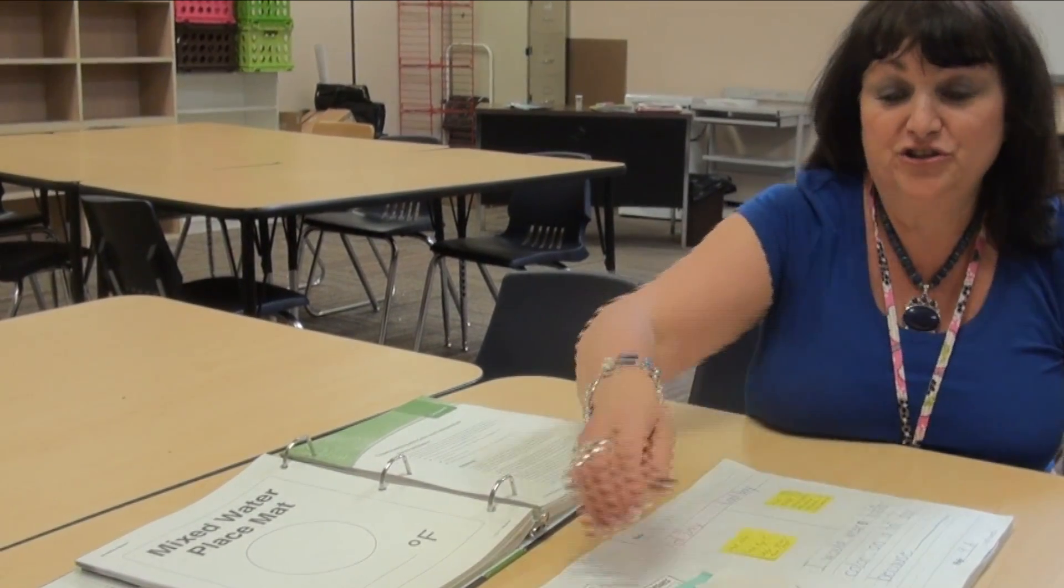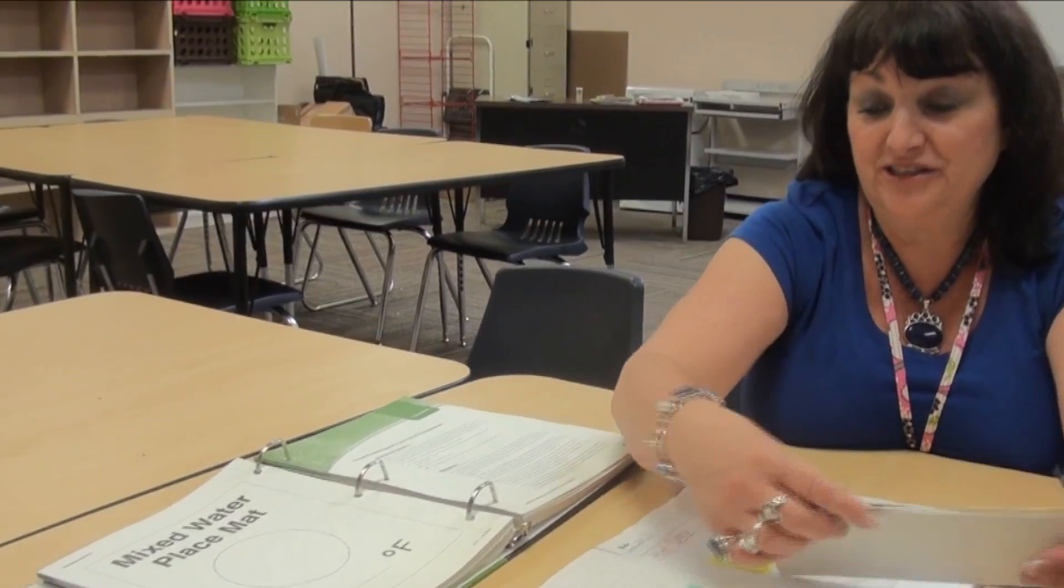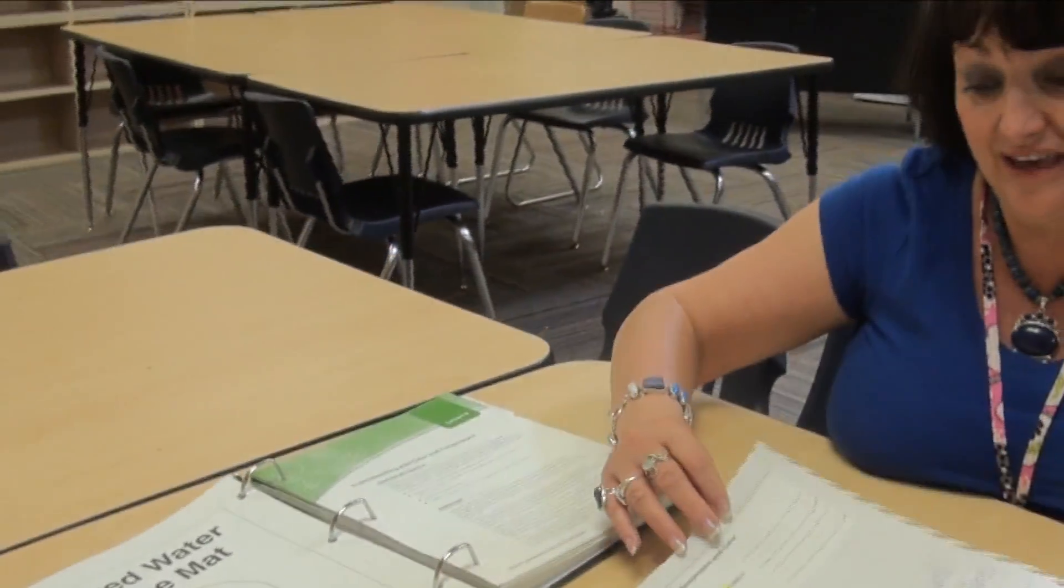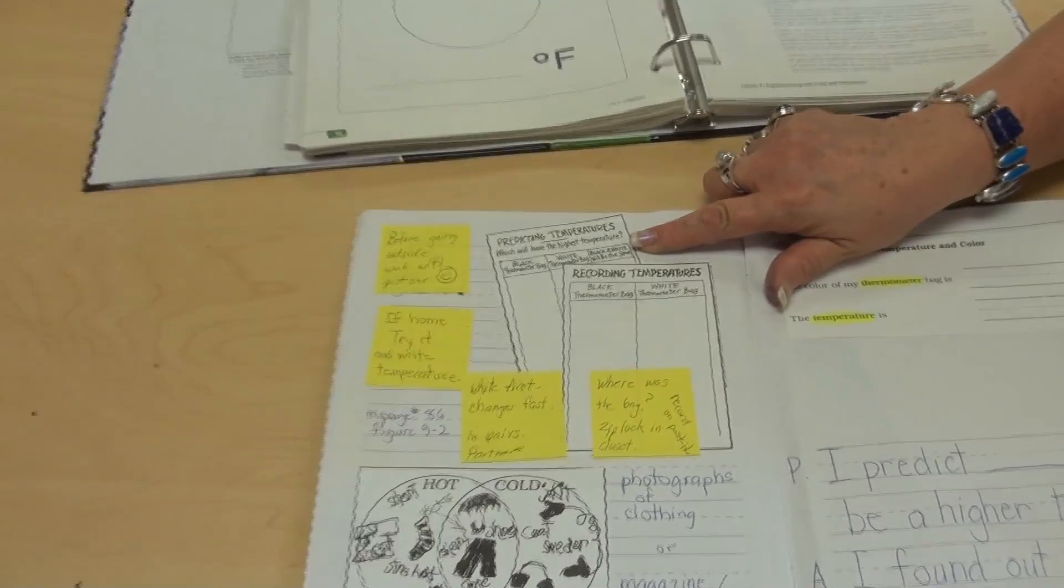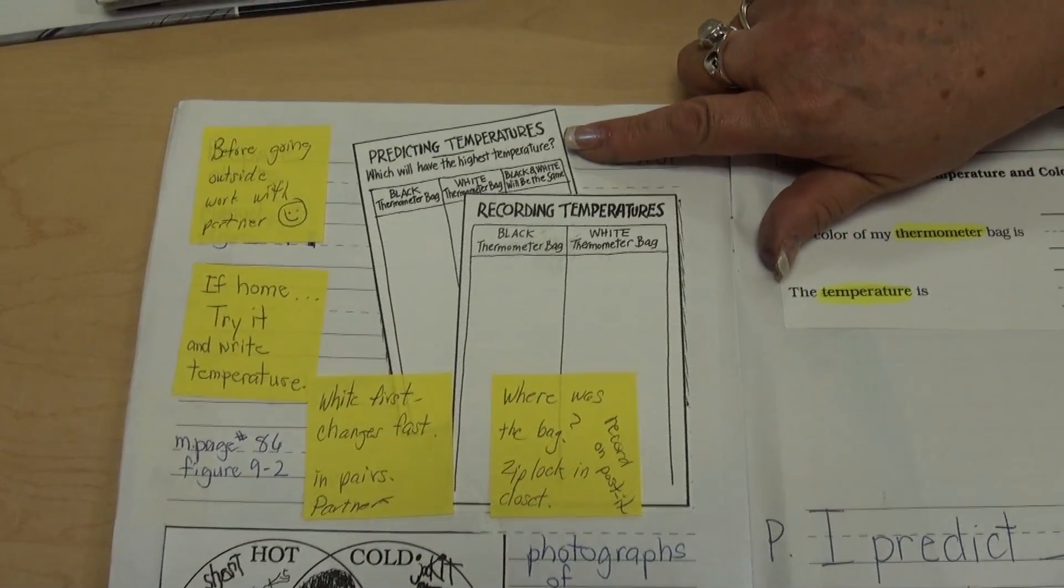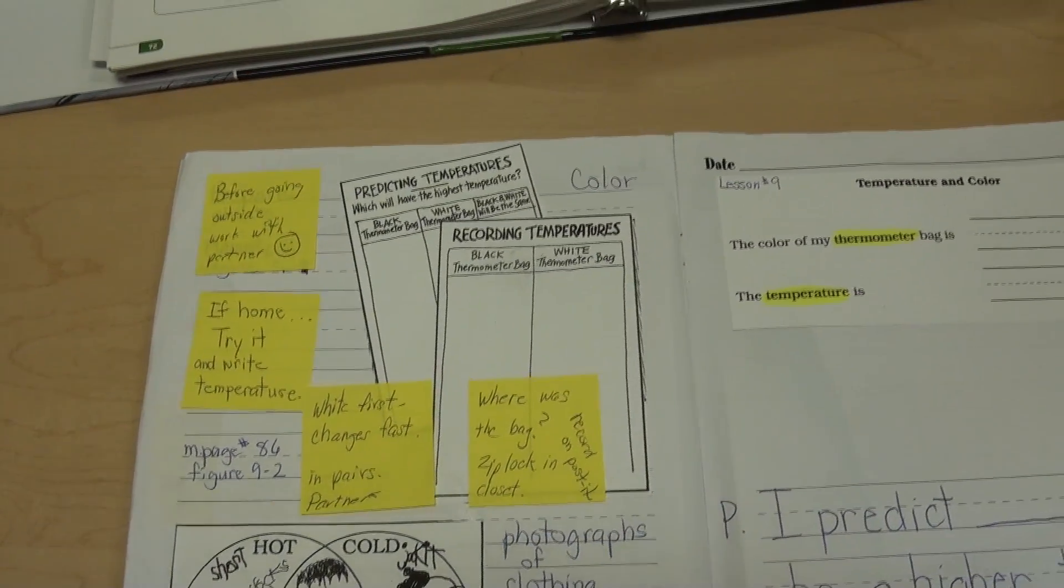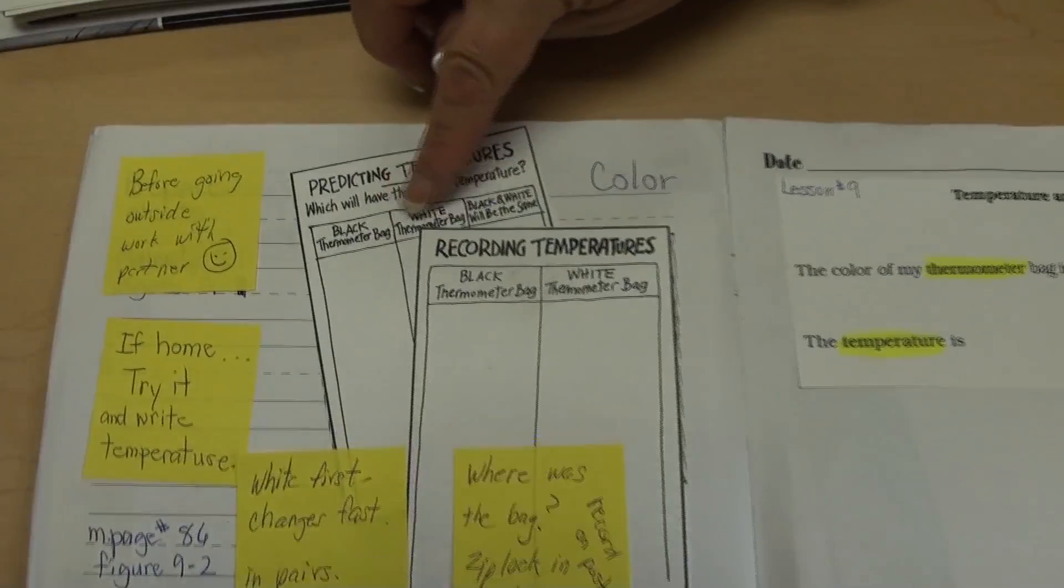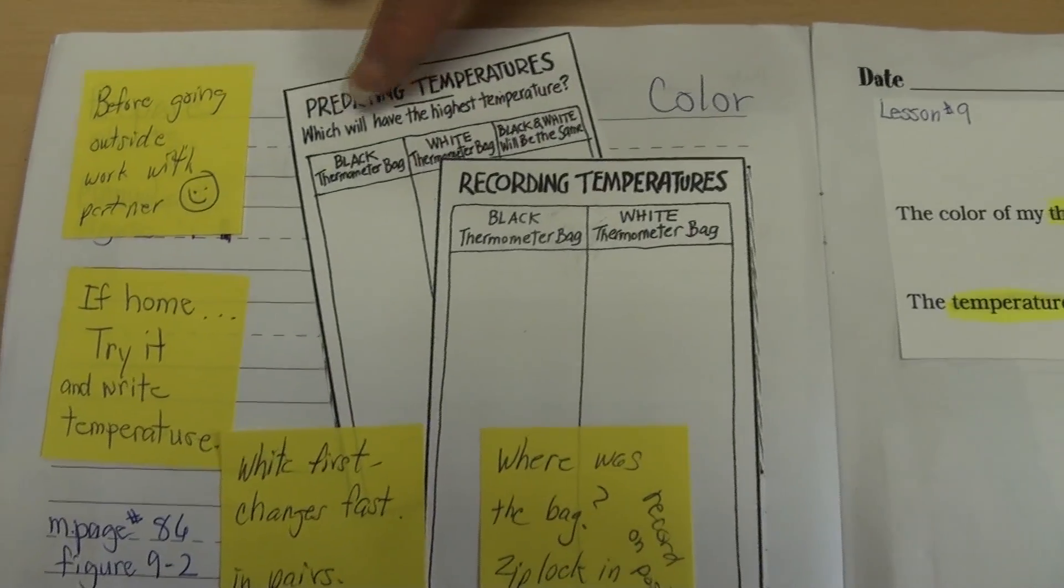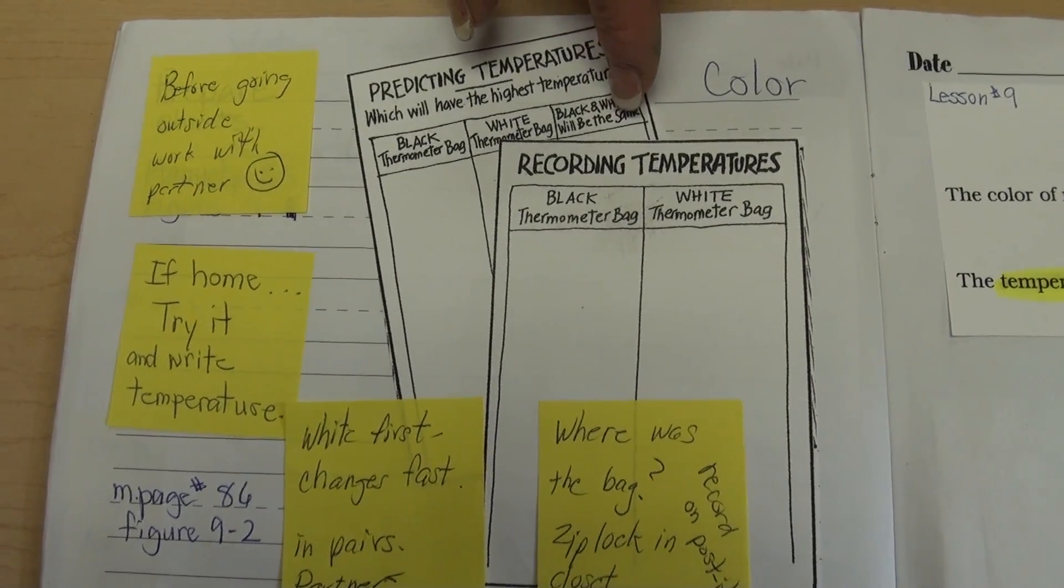Well, we ask the children to complete a chart and make a prediction of what they're thinking. The chart is in the manual, and the children are to respond to the chart. If they look at it, they need to pick: would the black thermometer bag, the white thermometer bag have the highest temperature, or will they be the same?